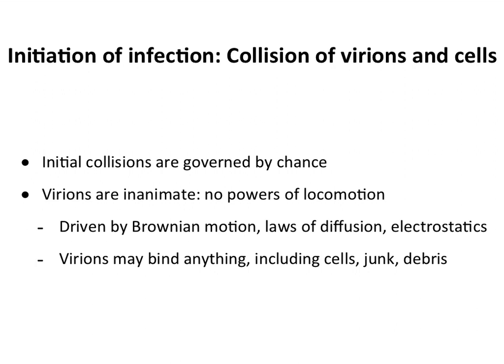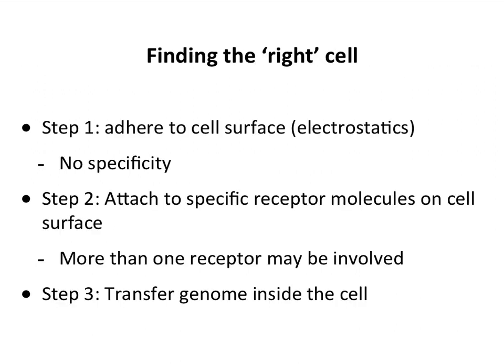Usually you don't start an infection with just one virus, because there's so much other stuff that viruses can bind to. In order to initiate an infection, they have to bind to the right cell. That starts with adhering to the surface non-specifically through electrostatic interactions, and then finding whether that cell has a specific receptor to which the virus can bind. There are lots of initial collisions, and at some point one ends up with the virus interacting with a specific receptor.